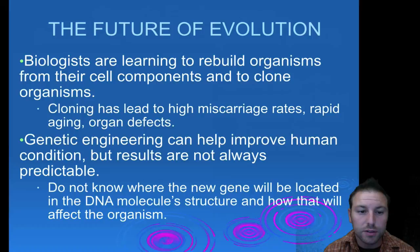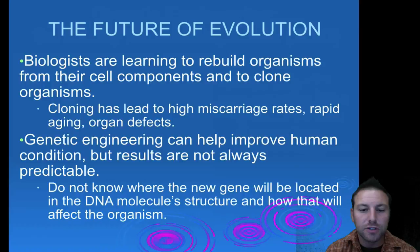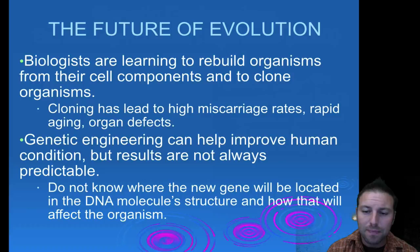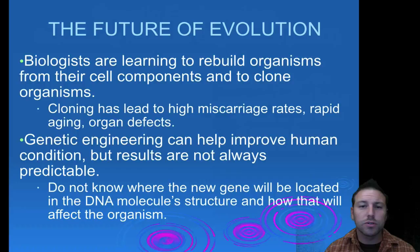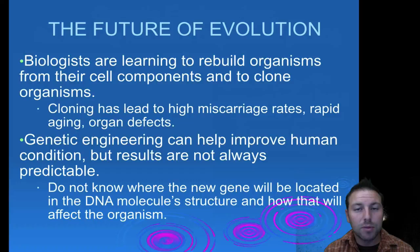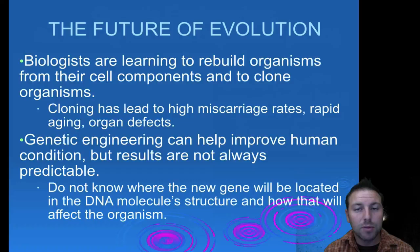We're also rebuilding organisms from cell components through cloning. Issues with cloning include higher miscarriage rates, aging problems, and organ defects — it's not a perfect science, but they're working on it. Genetic engineering isn't all bad; it can improve the human condition, though results are not always predictable. Norman Borlaug used agricultural genetic engineering to save millions of lives by feeding people. It can be good or bad, and there's a lot of controversy around long-term consequences — we'll have to wait and see.